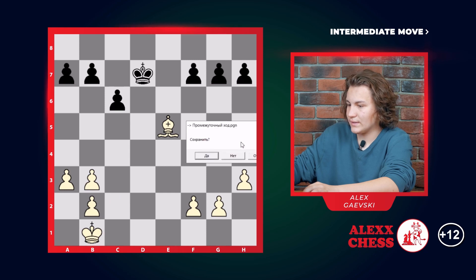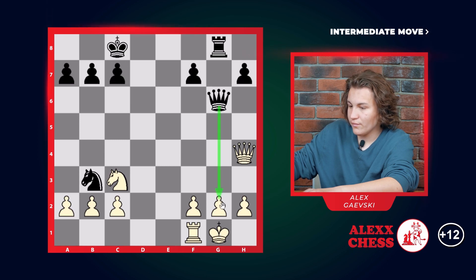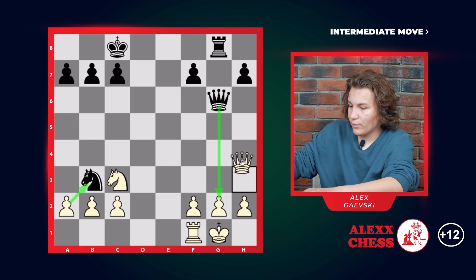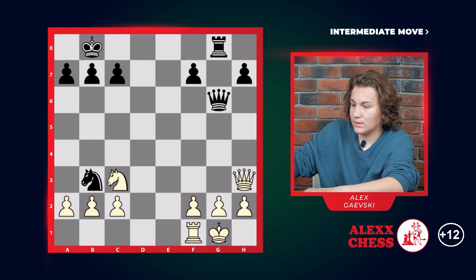Let's move on to the next example. In this example there are two problems. First is that there might be a checkmate next move, and second is that we want to eat this knight. So to solve the first problem, we go h3 attacking the king. So the king has to go, for example, b8, and only now we take the knight.